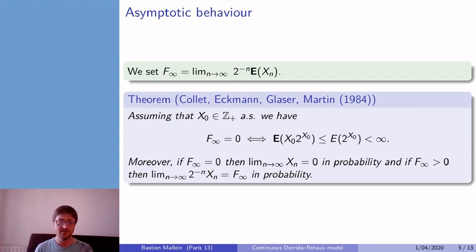then there is a necessary and sufficient condition for the expectation of Xₙ to grow at a sub-exponential speed. And they showed that if this integrality condition is satisfied, then F∞ is equal to zero, and in fact, Xₙ goes to zero in probability as n goes to infinity. This means that with high probability, every car in the park will park with probability that goes to 1 as n goes to infinity.